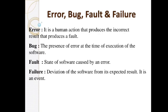An error is a human action — for example, when a programmer is coding or creating software, they can introduce errors. A bug is the presence of an error at the time of execution of software. A fault is a state where the software is not ready to be executed or cannot run on a system or device. A failure is a deviation from the expected result — if a company creates software and it does not meet its intended requirements, that is a failure.